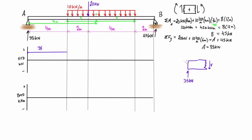Now in the next region we extend the free body diagram right up to just left of the point load, where we start picking up the distributed load. We're getting two meters worth of 10 kilonewtons per meter, so by the time we're just to the left of the point load, we have applied 20 kN pressing down. With 35 kN going up and 20 kN going down, we need another 15 kN going down — still in the positive sense. So the shear drops linearly down to 15 kN.